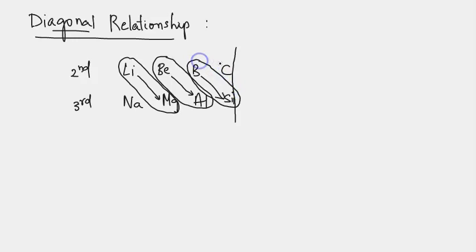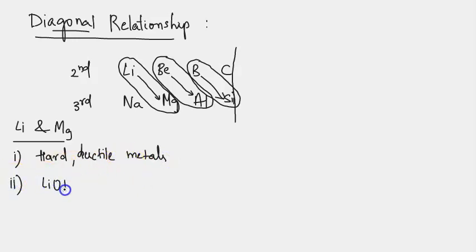Let us see the diagonal relationship of lithium and magnesium. The very first similarity: both are hard metals and both are ductile, while the rest of the members of the family are soft metals. Lithium hydroxide and magnesium hydroxide are weak bases, as discussed earlier.